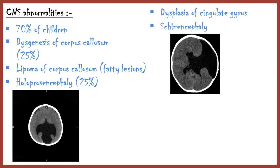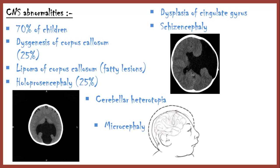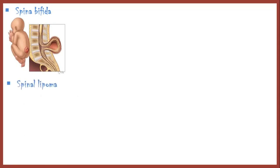Schizencephaly, which is characterized by a CSF-filled cyst which extends from the ventricular surface up to the periphery of the brain, cerebral heterotopia, microcephaly, seizures, vision problems, spina bifida, and spinal lipoma.